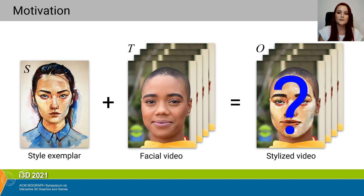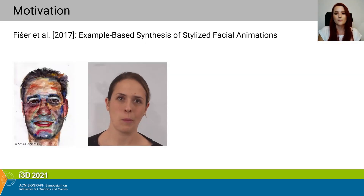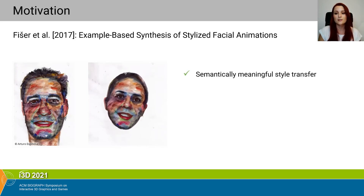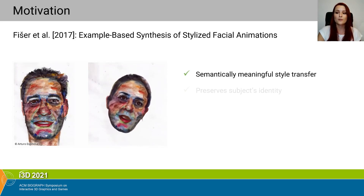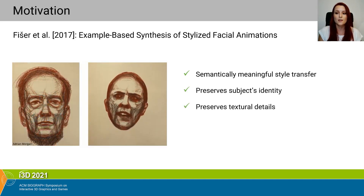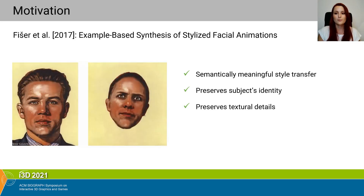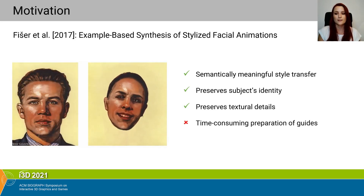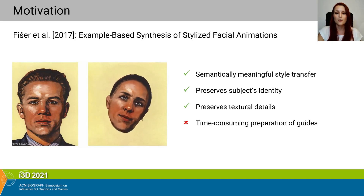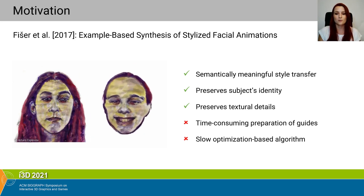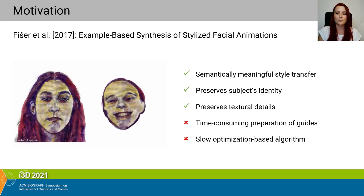Several approaches dealing with this task were published recently. One of them is Fisher et al.'s non-parametric guided texture synthesis that secures semantically meaningful style transfer, perfectly preserves the subject's identity and the visual richness of the style exemplar. However, the preparation of such guidance is computationally very expensive, and the style transfer algorithm itself is very slow due to its optimization nature. Hence, it is not possible to obtain stylized video in real time.